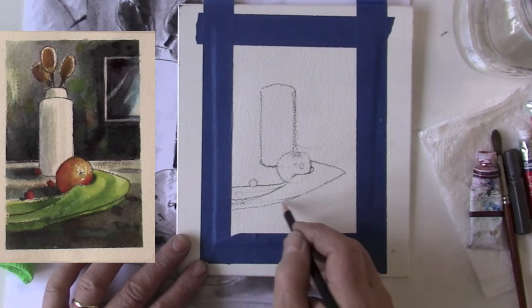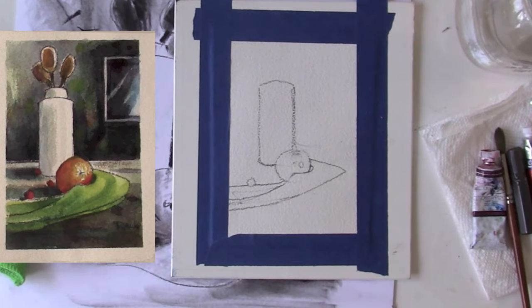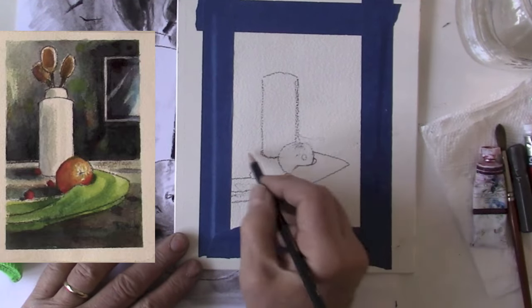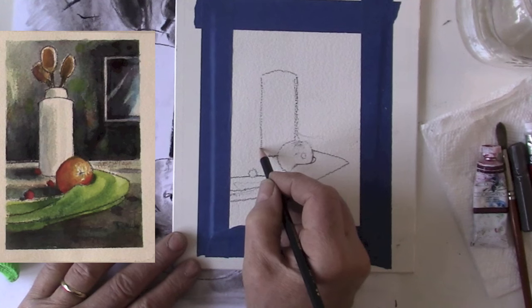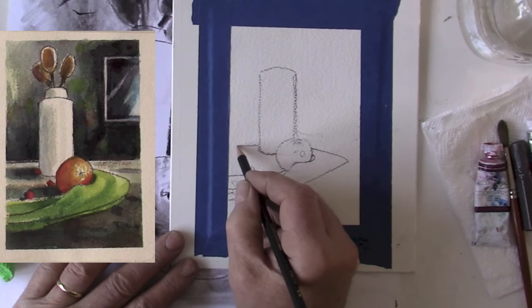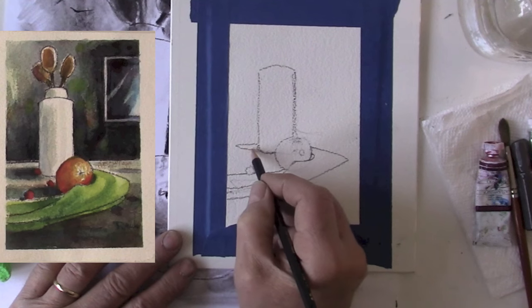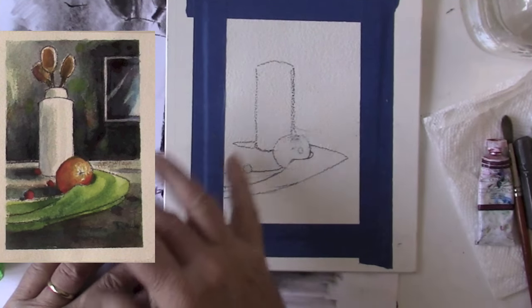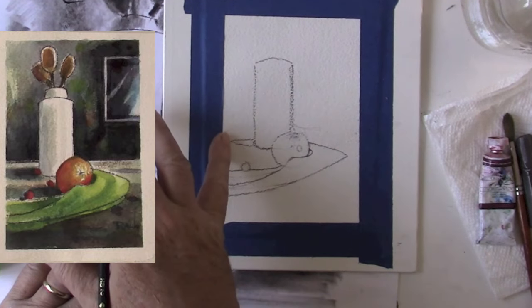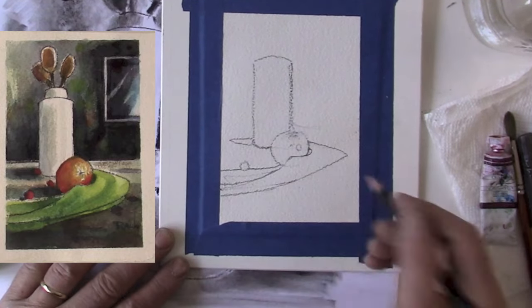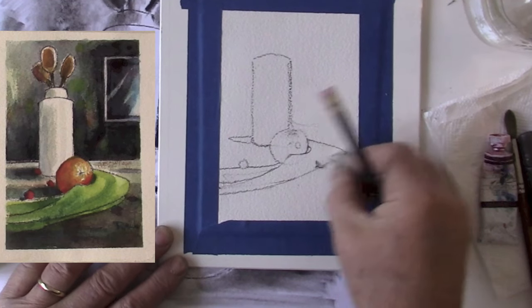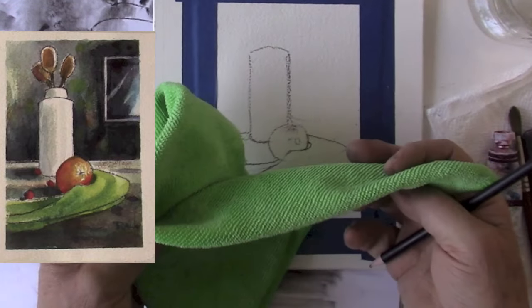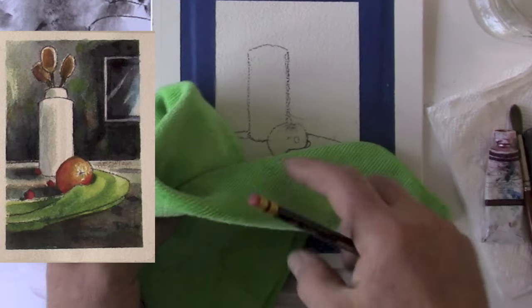We'll get rid of that pointy end section and we'll go straight over. Later on we'll add another little fold underneath the bottom of the cloth. Always good to put in a line and see what it looks like. That might work, it might not, but that's what erasers are for. You can change anything with an eraser, that's what it's for.